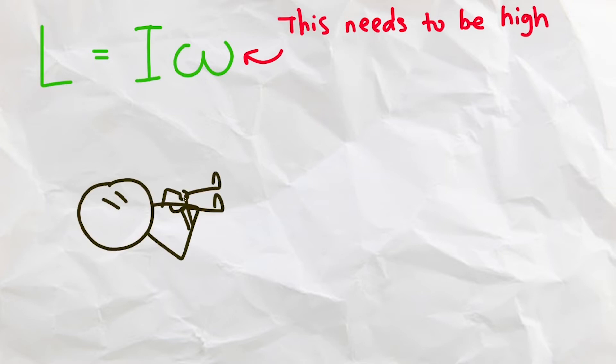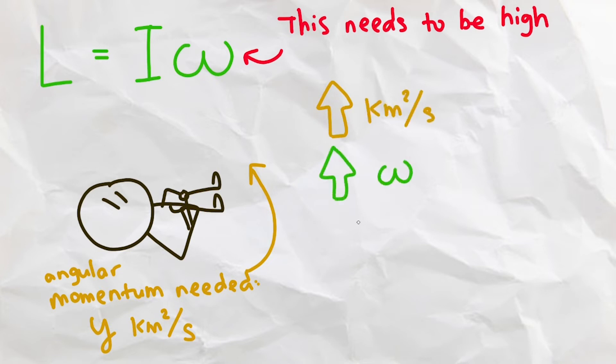In order to complete a full flip instead of faceplanting into the ground, we need to make sure that our angular velocity is high enough to complete a flip in the air so that we'll be flipping fast enough. Let's say we need y amount of angular momentum to complete a backflip, or y kilograms squared per second, as that's the unit for momentum, and we also want to increase our angular velocity as much as possible.